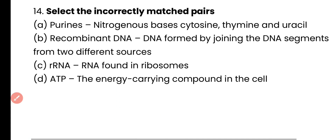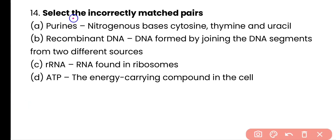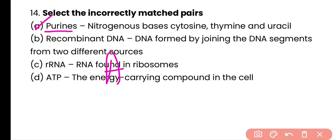Question number 14. Select the incorrectly matched pair. Option A: Purine — nitrogenous bases — cytosine, thymine and uracil. Recombinant DNA is formed by joining the DNA segments from two different sources. Ribosomal RNA is found in ribosomes. ATP is the energy carrying compound in the cell. The incorrect match is option A because purine bases are adenine and guanine, not cytosine, thymine, and uracil.